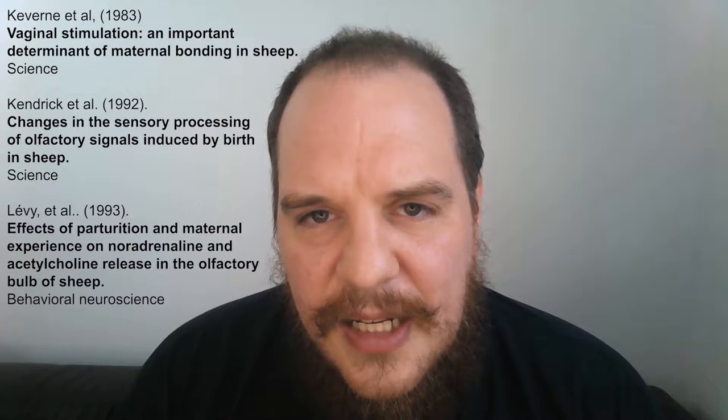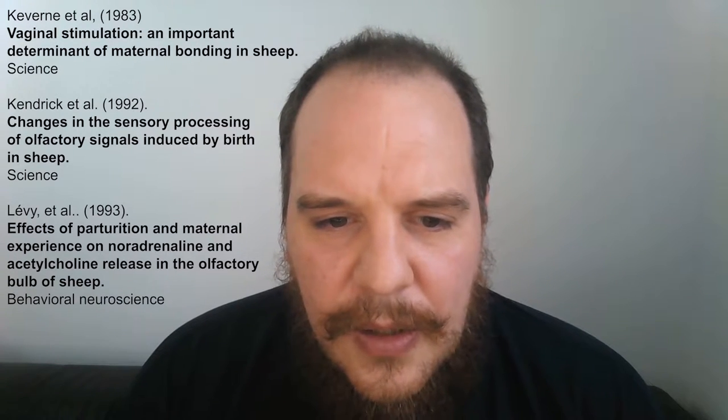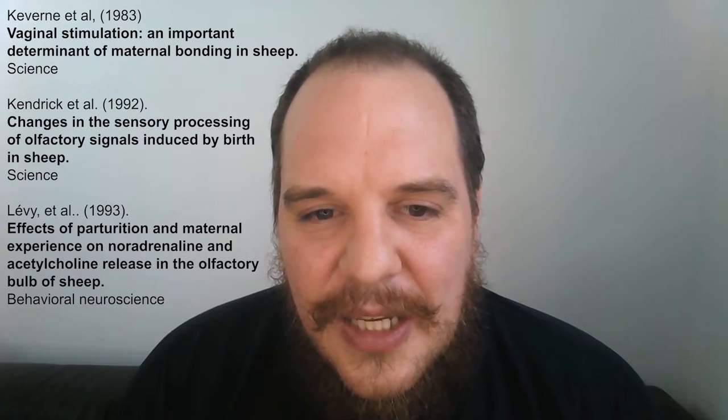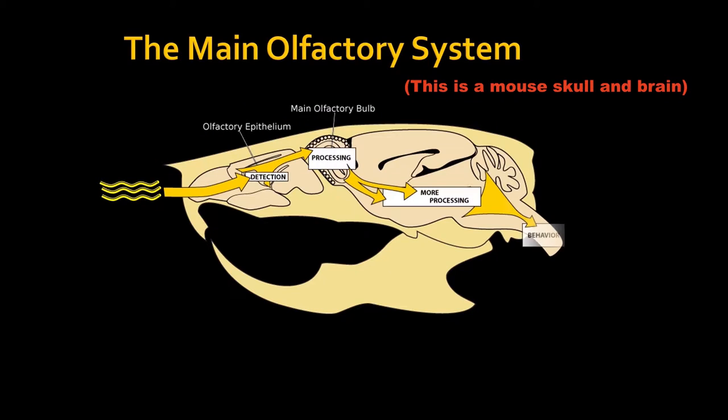They found that if you have a ewe — the female sheep — that would not accept a lamb, you could make it accept the lamb by stimulating the cervix of the ewe and then presenting the lamb. They already knew that this recognition in lambs and sheep is based on olfactory learning, so they looked at the olfactory bulb in sheep.